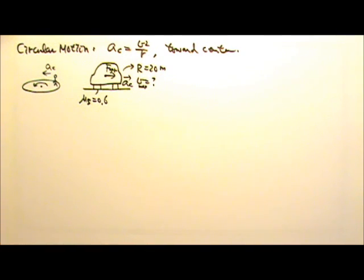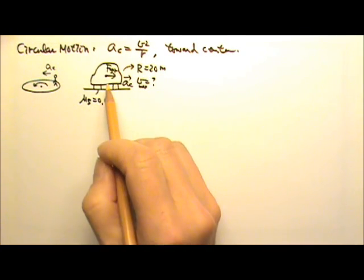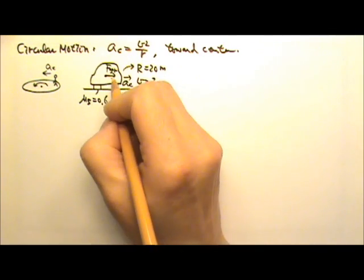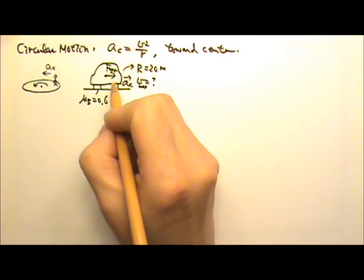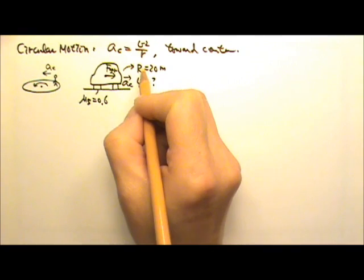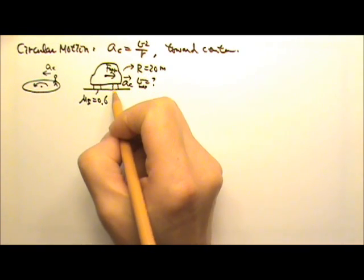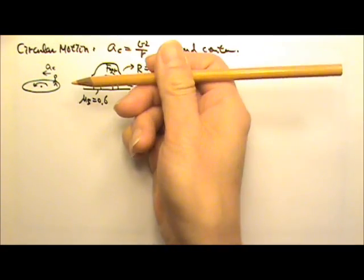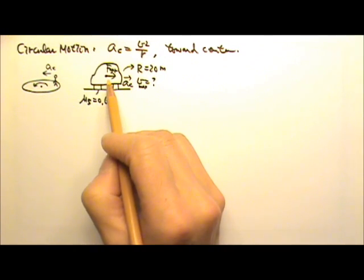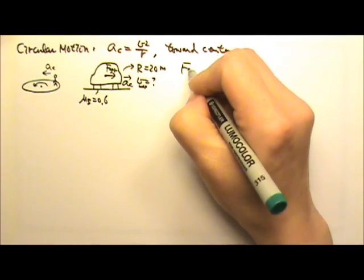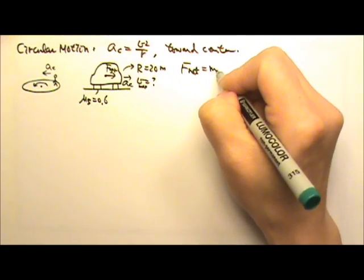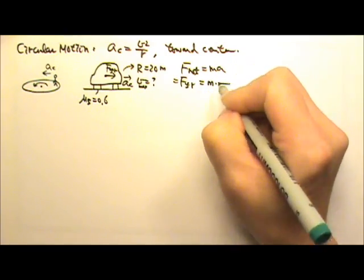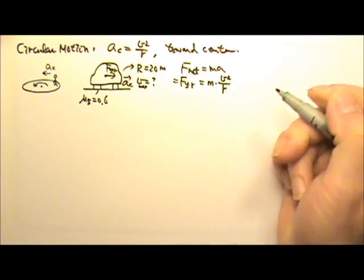This friction, if the car is not skidding, is static friction. Static friction acts against the tendency to slide. When the car makes a circular turn, the car and its occupants have a tendency to lean outward, so the car tends to slide outward. That's why friction acts inward. So when we write net force equals ma, only friction acts in the horizontal direction, giving us: friction = m times v squared over r.